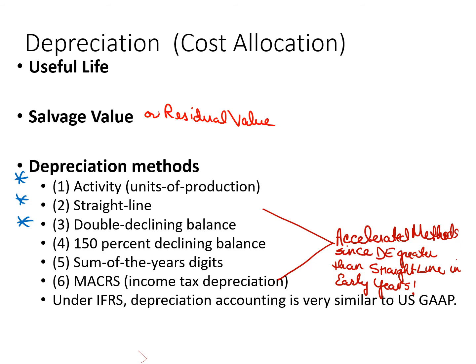The three methods we're looking at are: units of production (the activity method), straight-line, and double declining balance. There are other accelerated methods — 150% declining balance, sum-of-the-years'-digits, and methods used for income tax purposes called MACRS (Modified Accelerated Cost Recovery System). Under IFRS, depreciation accounting is very similar to US GAAP.